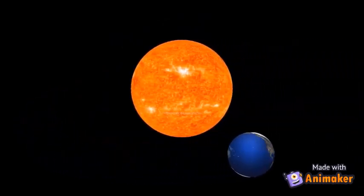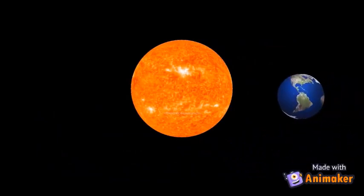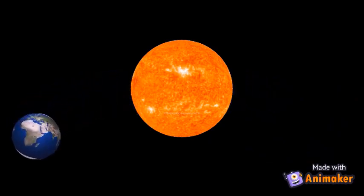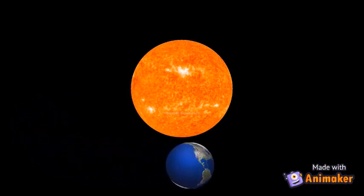Earth spins at 1,000 miles an hour. It takes Earth 24 hours to spin all the way around.